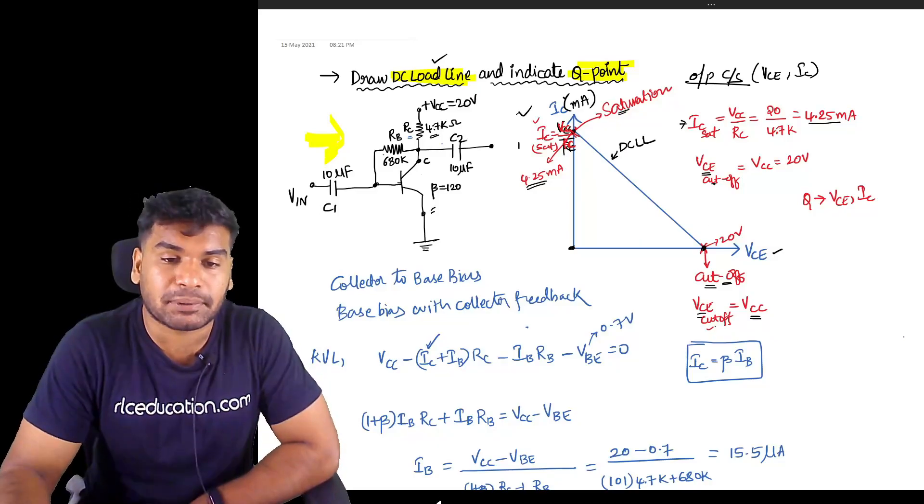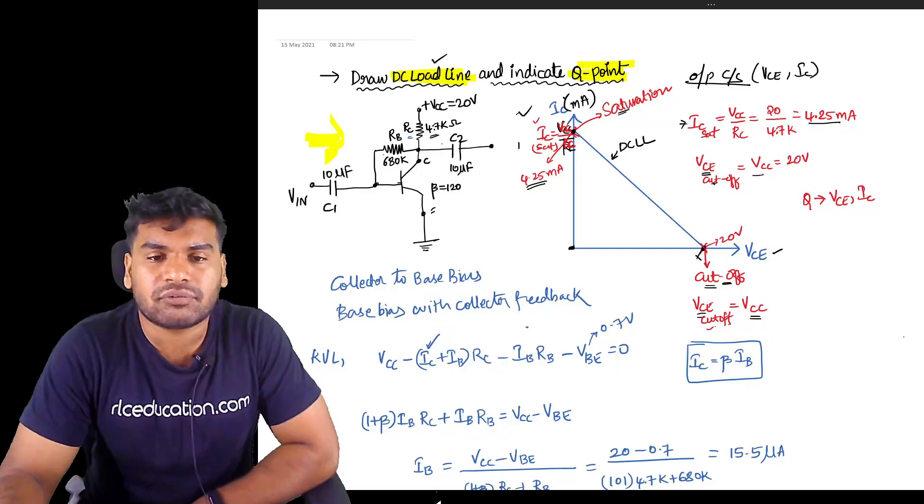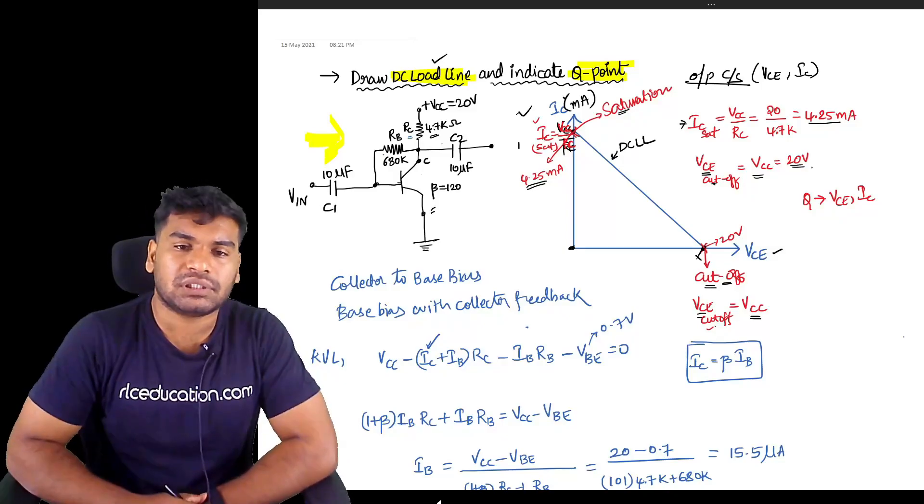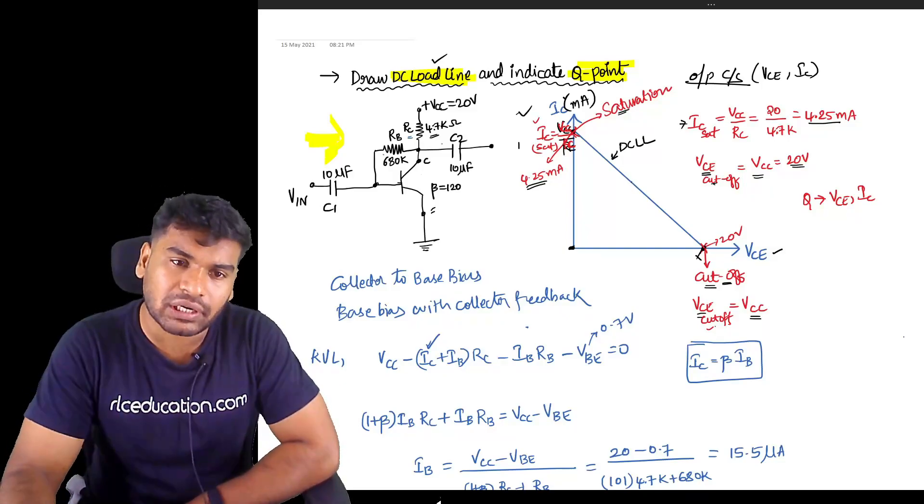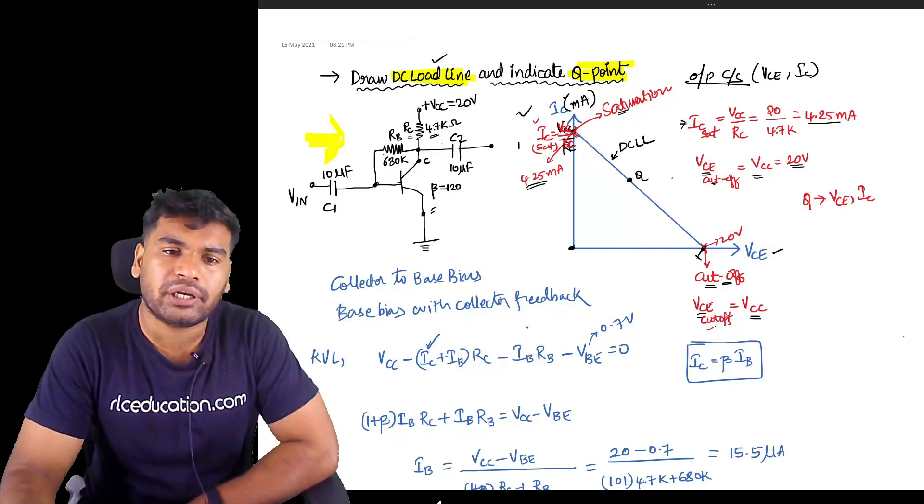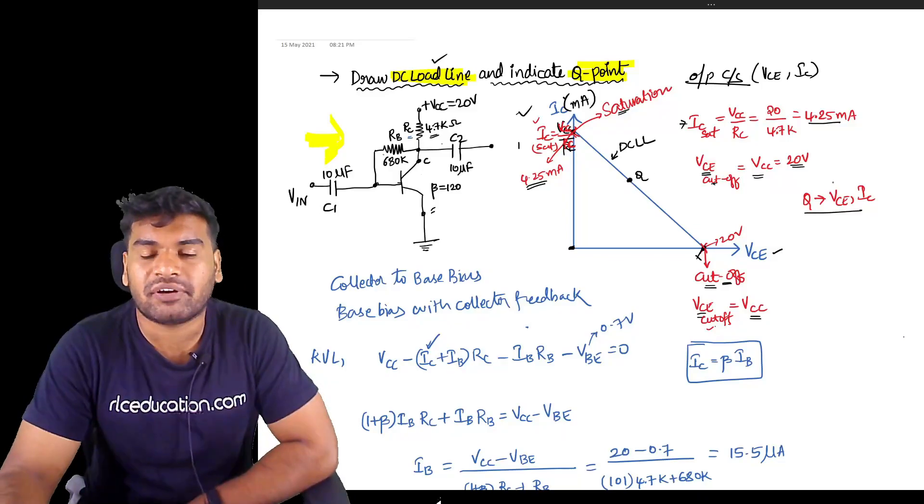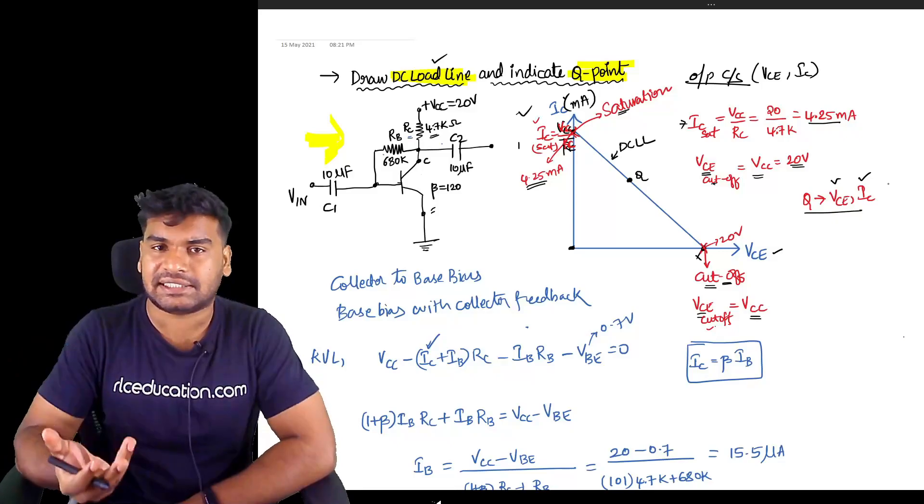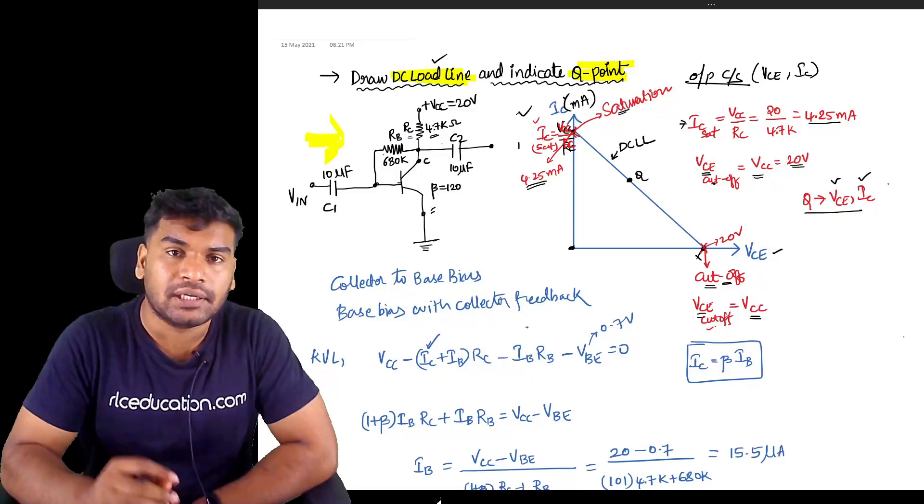This IC also will generally be in milliamperes only. Next, VCE cutoff we have to find out - that is equal to VCC which is nothing but 20 volts. So we got the DC load line. Now on this load line at some point there lies this Q-point.